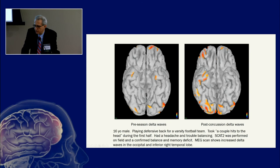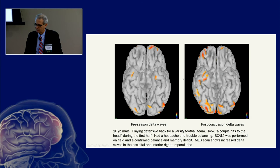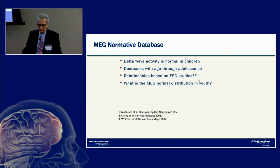A visual example shows a 16-year-old defensive back whose pre-season MEG delta wave map is shown alongside a scan taken within several days of a confirmed concussion — diagnosed after helmet hits, headache, trouble balancing, and confirmed balance and memory deficit on SCAT2. The post-concussion scan shows a visually obvious increase in delta wave activity, illustrating MEG's potential for tracking concussions and following their natural history.